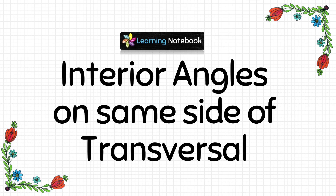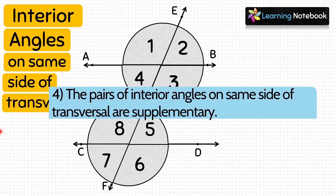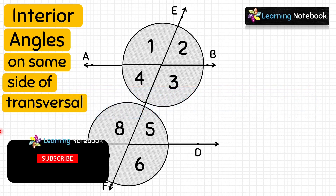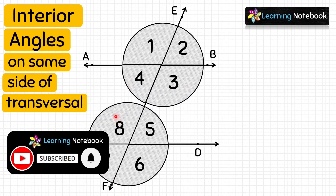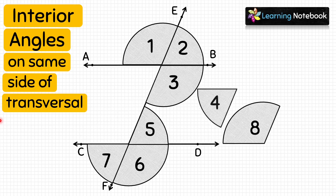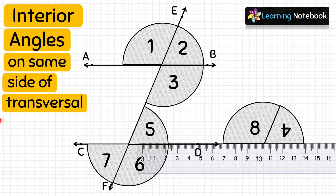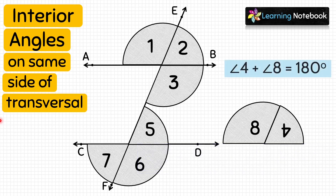The next topic is interior angles on the same side of the transversal. The fourth aim is to prove that the pairs of interior angles on the same side of the transversal are supplementary — that is, angle 4 plus angle 8 equals 180° and angle 3 plus angle 5 equals 180°. Let's make another set of these 8 angles. Take angle 4 and angle 8 and place them as shown. With the help of a ruler, we check that their non-common arms are in a straight line, which means angle 4 and angle 8 are supplementary.